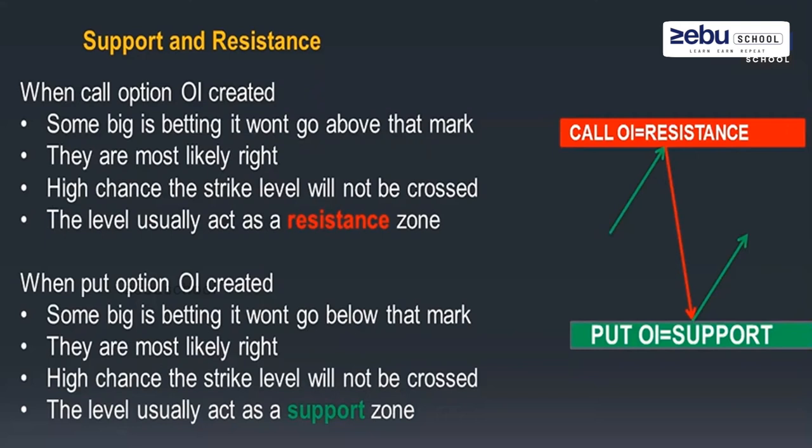Some clients regularly trade penny stocks and start accumulating 500, 1000, or 2000 quantities because the option price is very low. But by expiry, if the market doesn't cross that particular range, those positions end up at zero — that entire money is called out of the money. We have to limit this kind of unnecessary trading in the stock market.